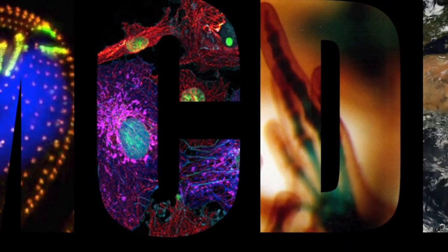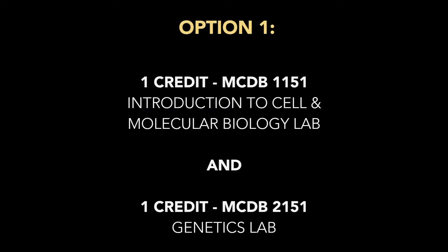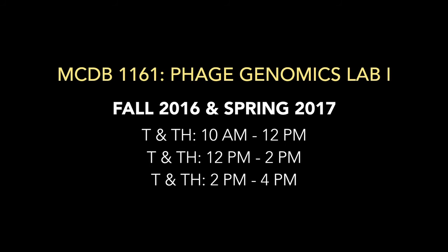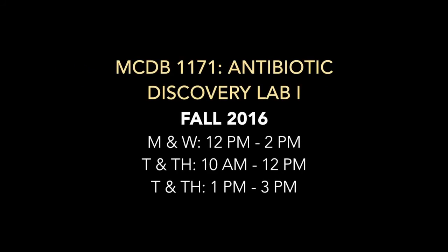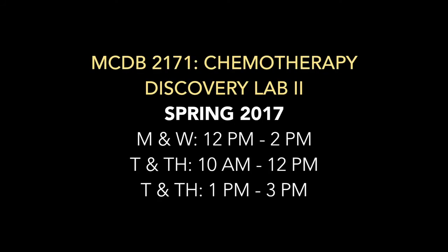To fulfill the requirement for introductory laboratory courses as an MCDB major, there are two options: the first requires taking two one-credit laboratory courses, and the second is one two-credit research-based course. Research-based courses are MCDB-1161 Phage Genomics Lab 1 offered in the fall and spring, MCDB-1171 Antibiotic Discovery Lab 1 offered only in the fall, and MCDB-2171 Chemotherapy Discovery Lab 2 offered only in the spring.